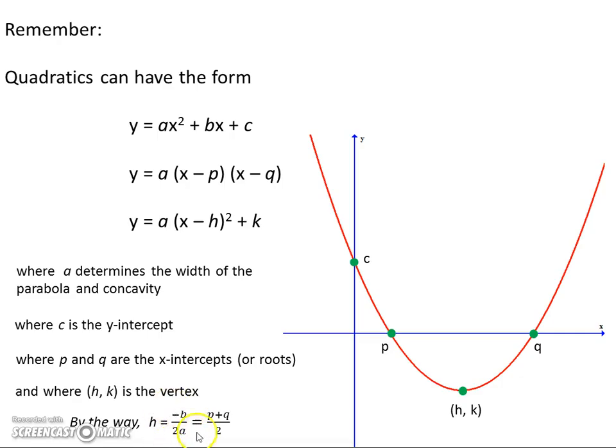And also h is given by negative b over 2a which you'll recognize from the quadratic formula. It's always p plus q over 2.